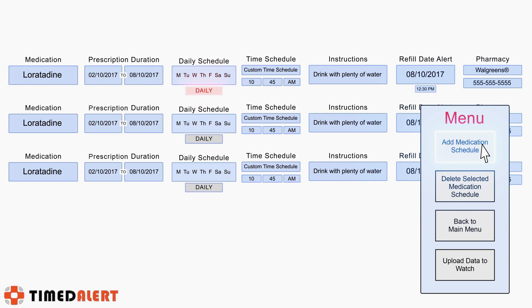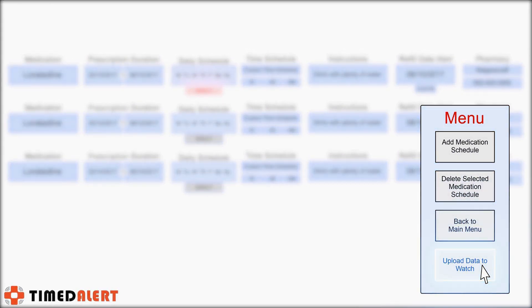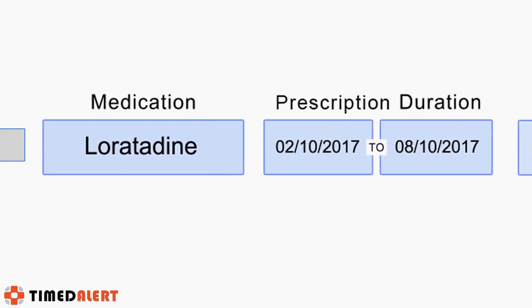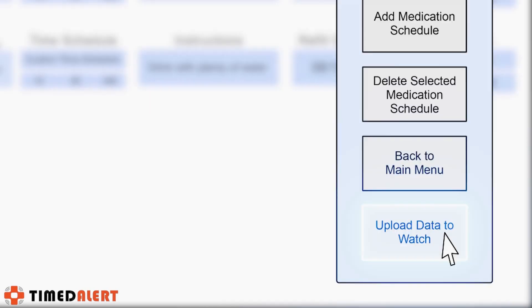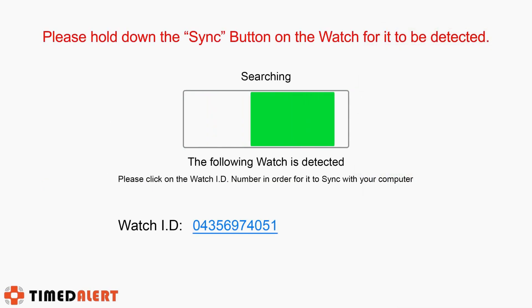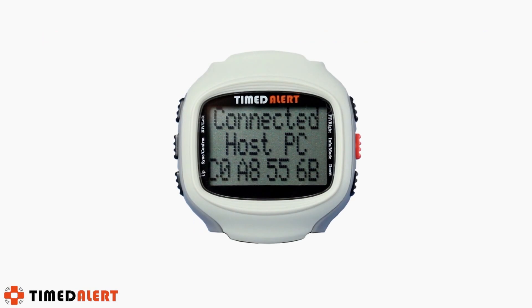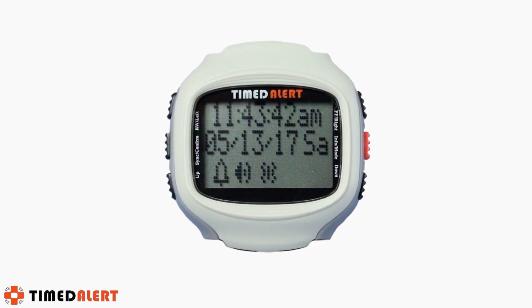Once you have created your desired number of medication schedules, you can upload the data to the watch by following similar steps as previously done. First, select the medication schedule that you would like the watch to have by clicking the checkbox to the left of the schedules you wish to upload. Then click the upload data to watch button, remember to press and hold the sync button for three seconds, wait for the ID number to appear, and click on it to upload the schedule data to the watch. With the new data successfully uploaded, you can return to the main menu.